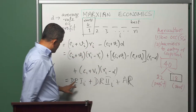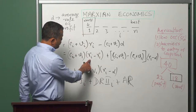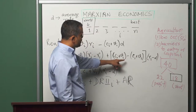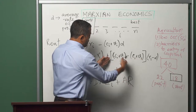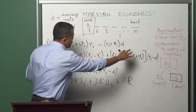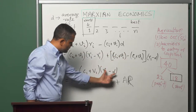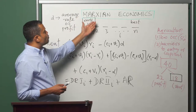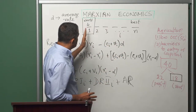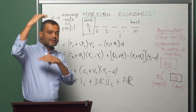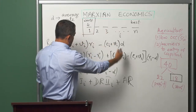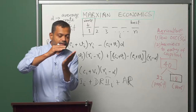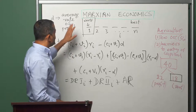On the worst plot of land both differential rent of variety 1 and differential rent of variety 2 will be zero. Because when looking at the worst plot, the rate of profit earned equals R1, so the DR1 term is zero; and the capital invested equals C1 plus V1, so DR2 also becomes zero. Therefore on the worst plot of land the only rent that remains is the absolute rent. We can thus understand absolute rent as the amount of rent earned by the landlord who owns the worst plot of land. On any plot better than the worst, more rent is earned — and that additional amount is the differential rent, coming from the difference in quality relative to the worst plot.